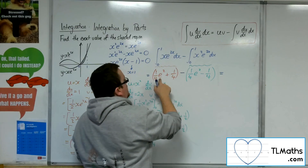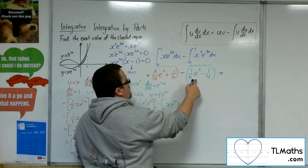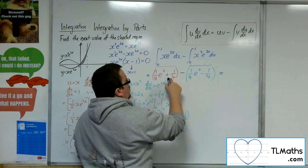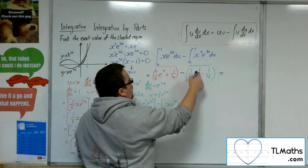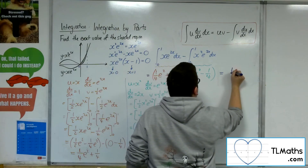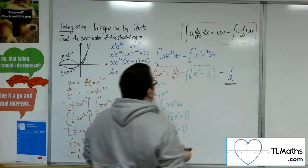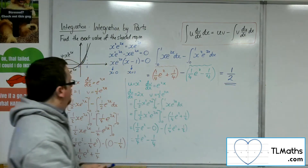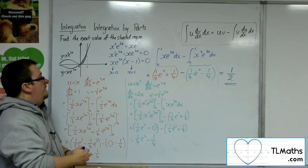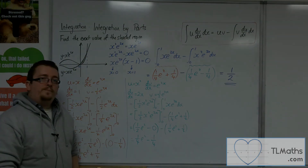Subtracting: 1 quarter e to the 2 minus 1 quarter e to the 2 is 0. Then 1 quarter take away minus 1 quarter is 1 quarter plus 1 quarter. So the answer is 1 half. That is the solution to the problem.